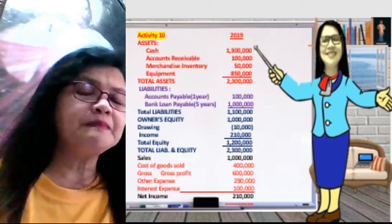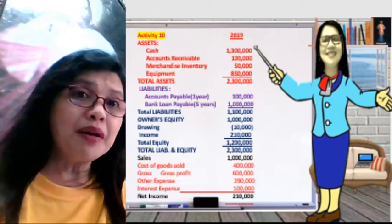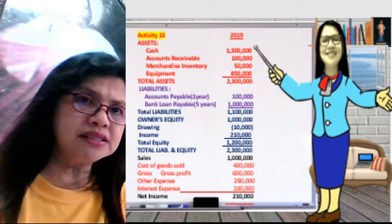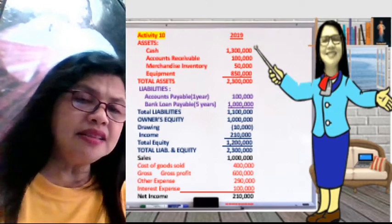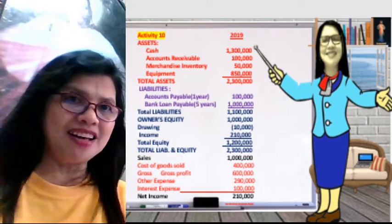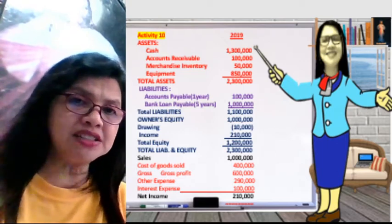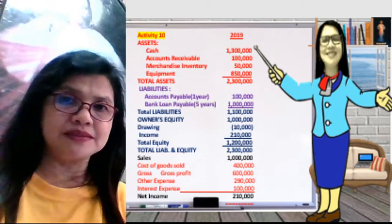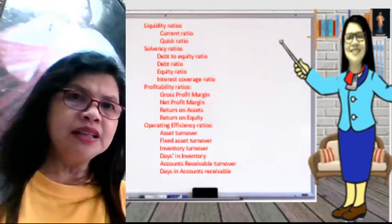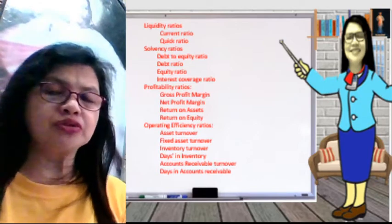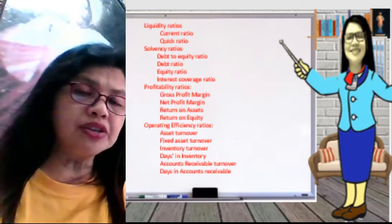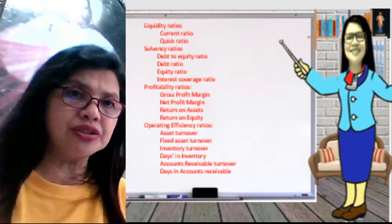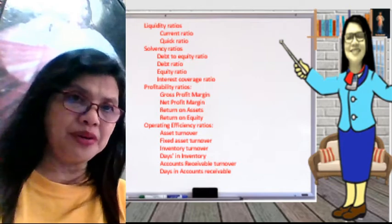Moving on, we have here the problem. The exercise problem gives us the asset accounts, the liabilities, the equity, and the income statement accounts. From this financial data, we will be solving our financial ratios. These are the items that we need to solve: the liquidity ratios, solvency ratios, profitability ratios, and operating efficiency ratios.